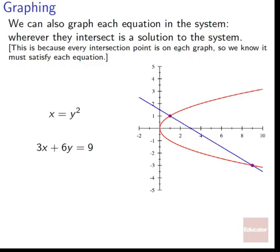Graphing: we can graph each equation in the system. Wherever they intersect is a solution to the system. A graph shows all points that satisfy a single equation, so if a point satisfies both equations simultaneously, it must lie on both graphs — wherever they intersect is a solution. For x = y² and 3x + 6y = 9, graphing produces a red curve and a blue curve, and they intersect at our two solution points.